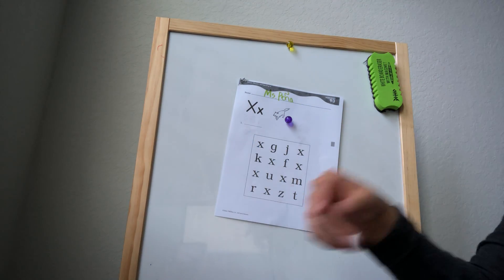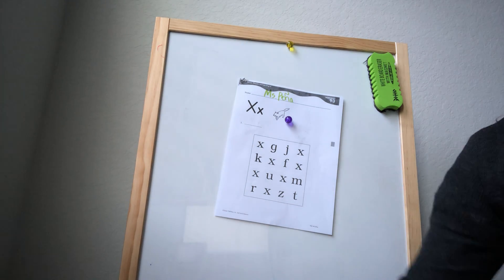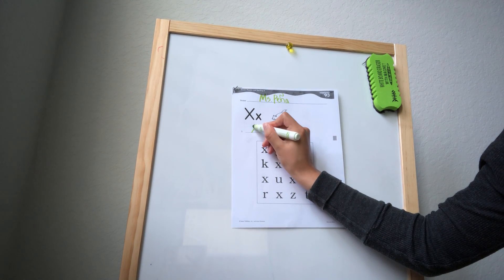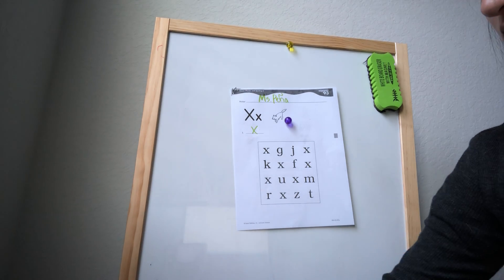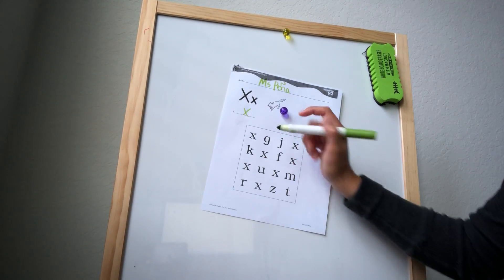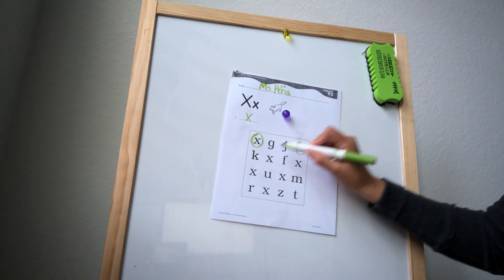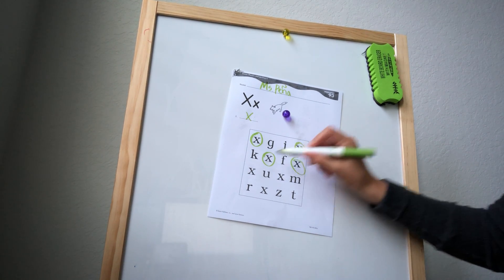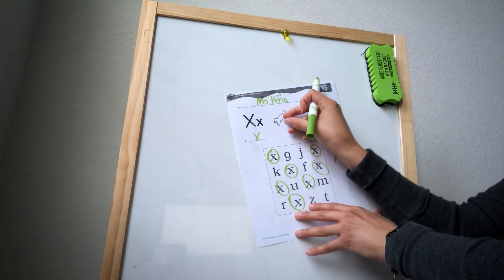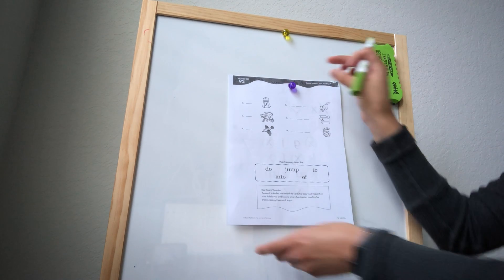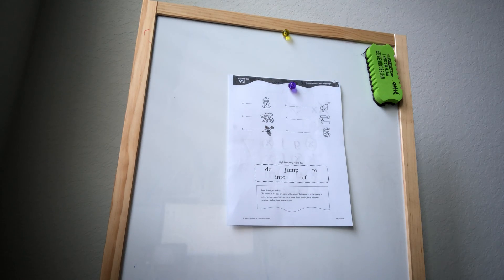Okay. Get ready for number one. Okay. Ready? X. Remember, start from the top. Okay. Now we can circle the X's. One, two, three, four, five, six, seven. Seven of them. Okay. I'll wait for you to circle.